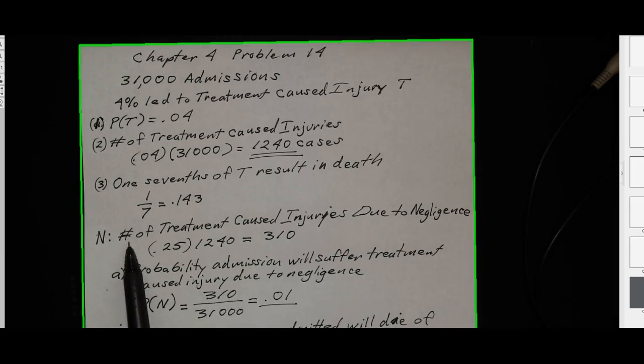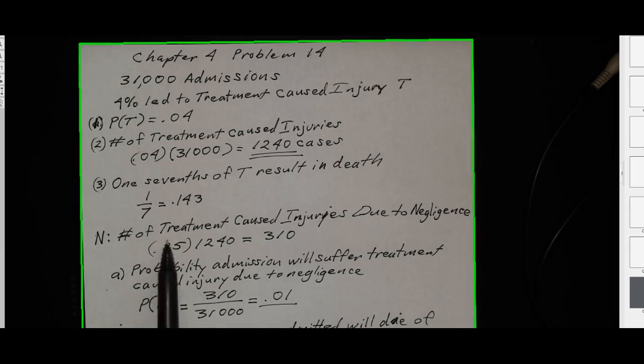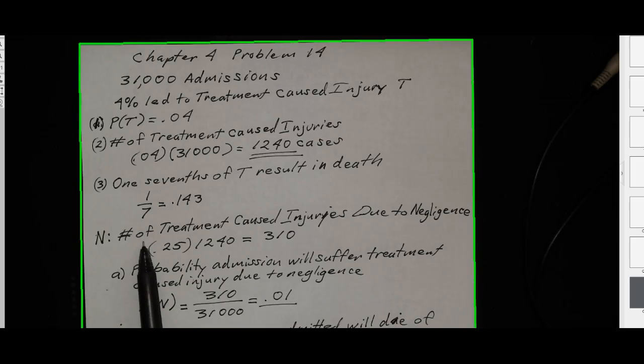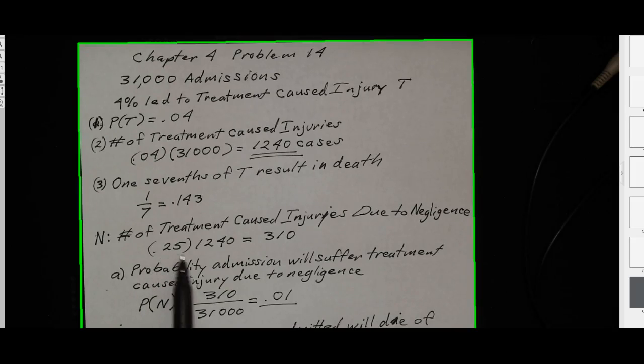They also said that the number of treatment caused injuries that were due to negligence was one fourth, or 0.25 times the number of treatment caused injuries. So 310 of them were due to negligence.